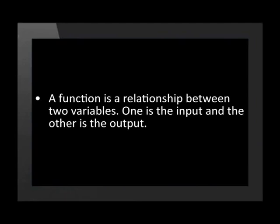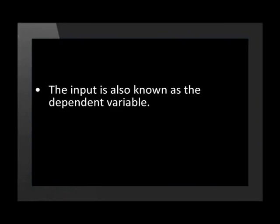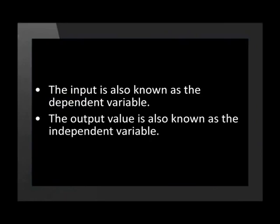A function is a relationship between two variables. One variable is the input and the other is the output. For every input value, there can only be one corresponding output value. The input is also known as the dependent variable. The output value is also known as the independent variable.